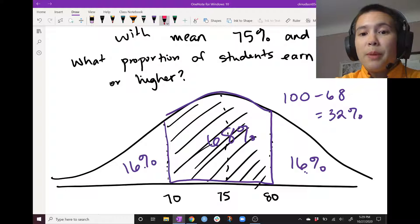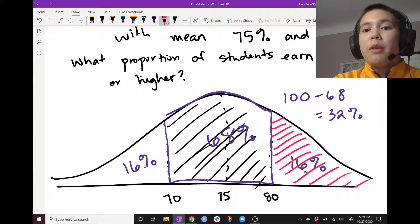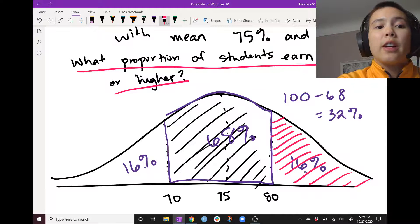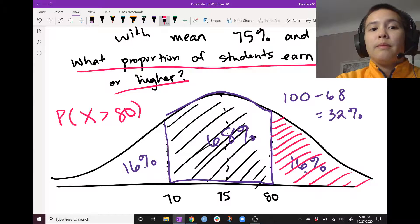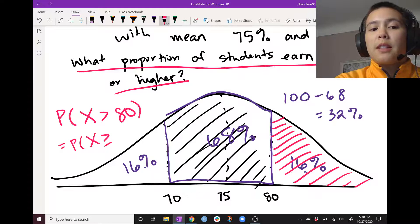So this tail has 16% and this tail has 16%. And this is exciting because this is the tail that we're looking for because we want to know what proportion of students earn 80% or higher. So we're looking for the probability that X is greater than 80, which if you take calculus, you'll learn is actually the same thing as probability X is greater than or equal to 80.